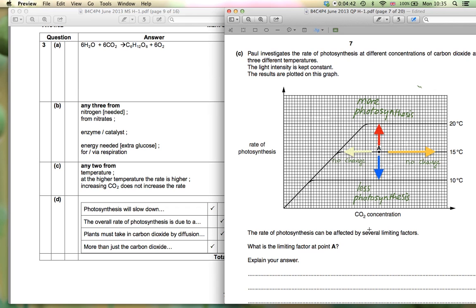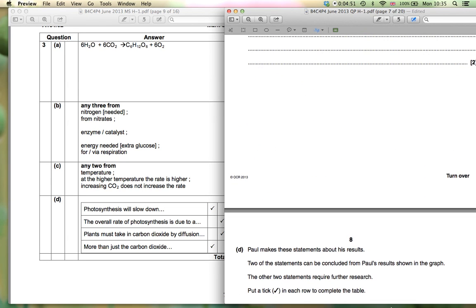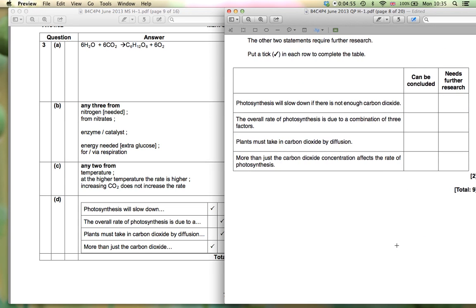So the answer for part C is temperature change because the higher the temperature the higher the rate of photosynthesis and increasing the carbon dioxide level does not change the rate. The next part is this tick box. Okay, from his experiment Paul can conclude some of these things and can't.